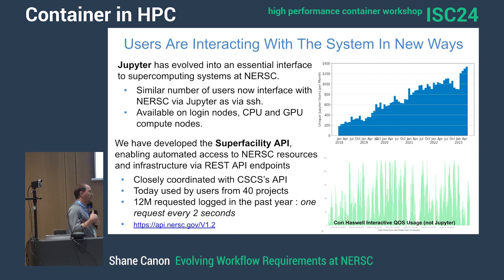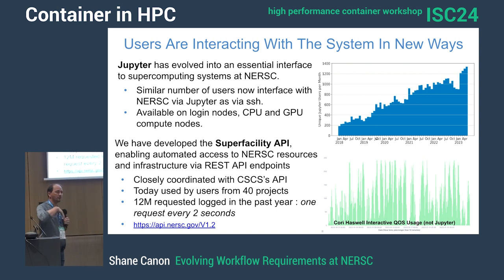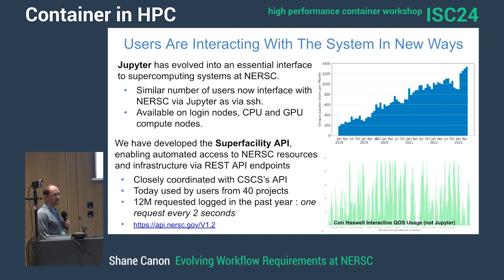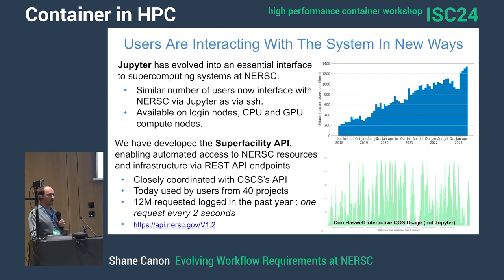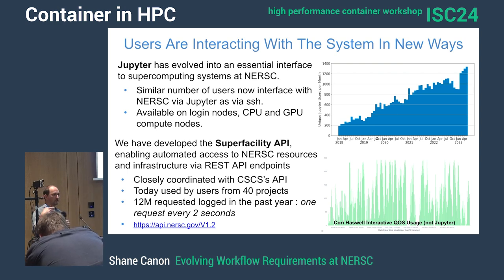Increasingly we have people coming in through JupyterHub — that's the main interface and the way they use the system. It's not just people at the command line doing SSH. On a given month, we have like 700 users that come in through Jupyter, so it's a sizable portion of the active user base. And then the SuperFacility API is our API to allow API-driven workloads.